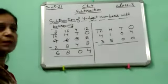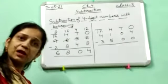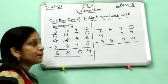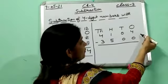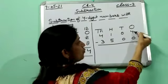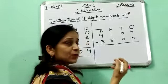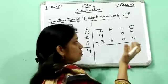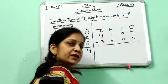In this way you have to subtract with the borrowing. Understood? See one more example. In this one's place we have to subtract 0 from 4. I have explained you, 0 subtracted from any number gives the number.